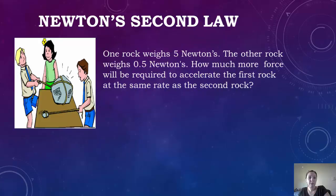Okay, so let's look at this problem. One rock weighs 5 newtons and the other rock weighs 0.5 newtons. How much more force will be required to accelerate the first rock at the same rate as the second rock? So you're trying to get them equal, and if you want to do that, you'd have to multiply 0.5 times 10 to get it to 5 newtons. That way they're equal and they're going to accelerate at the same rate.